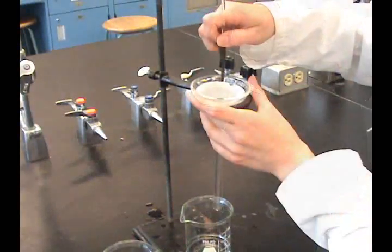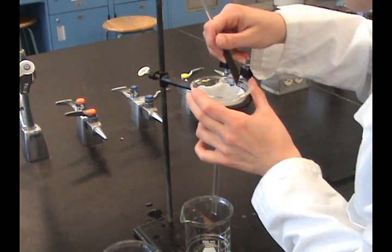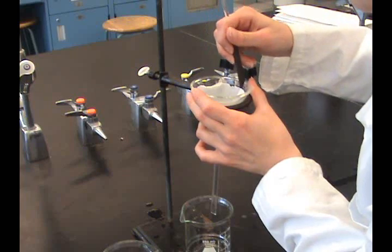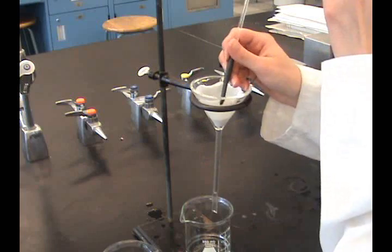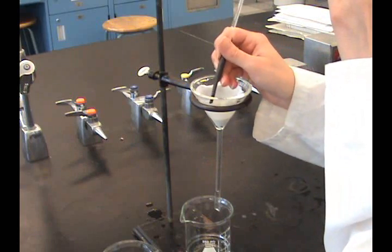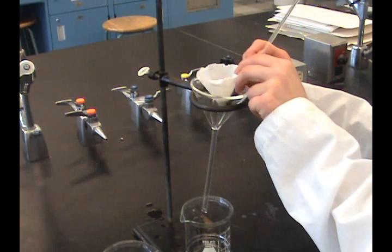Use a policeman to release the filter paper from the funnel carefully as not to rip or tear the filter paper. If igniting, fold the upper edges and place the filter with the filtrand in a crucible that has been brought to constant mass.